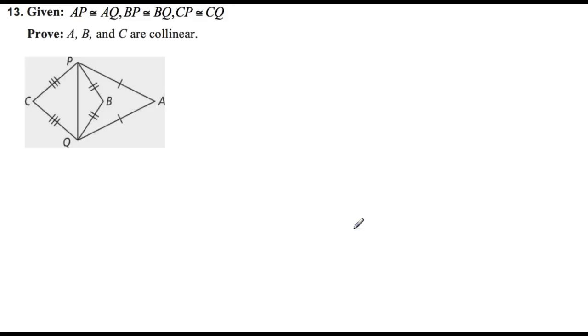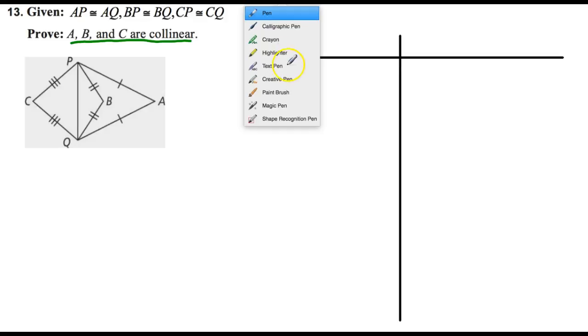This one says given AP is congruent to AQ. Is that drawn on here? It is, AP and AQ. BP and BQ right here. And then CP and CQ. Now notice we're dealing with three isosceles triangles here. We're trying to prove that these are collinear. And I'm not going to be super strict on whether you can get some of these theorems. Sometimes we have proofs like this one, it's kind of random.